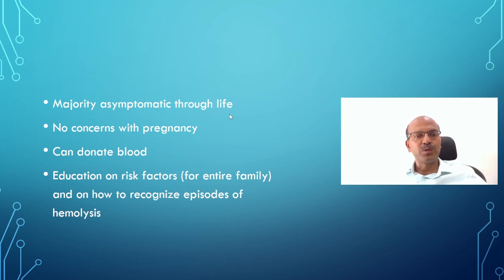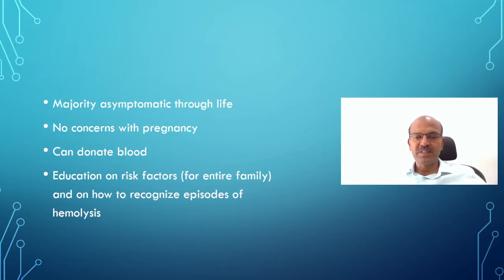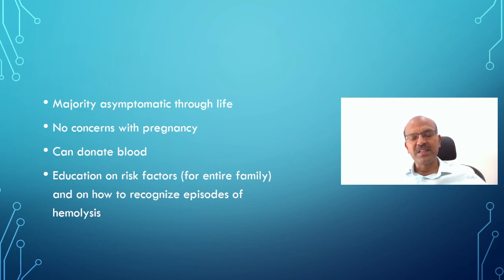The majority of G6PD-deficient individuals are asymptomatic through life and there are no concerns with pregnancies — a carrier girl can become pregnant with no problems. They can donate blood as well. It is important to educate the entire family on risk factors so everyone is aware, and parents should be advised to inform any physician they encounter about this history so that medications can be avoided. In case the child comes with hemolysis, treatment is similar to any acute hemolysis — identify and remove the trigger first, use transfusion and supportive treatment for pain and fever, and wait for the hemolysis to improve. Thank you so much for listening and do share it.